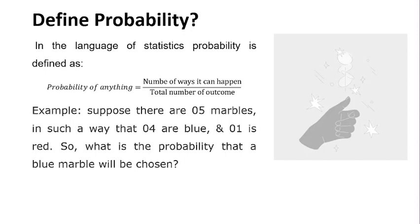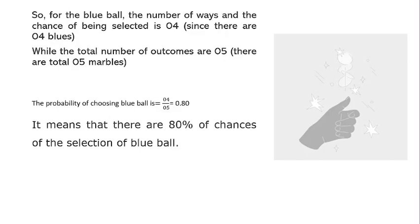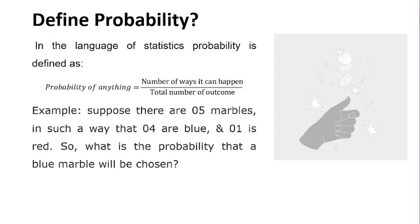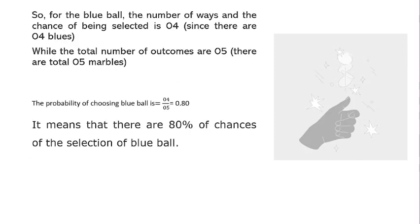Four marbles are blue and one is red. So what is the probability that a blue ball is selected? For the blue ball, the number of ways and the chance of being selected is four, since there are four blue balls.